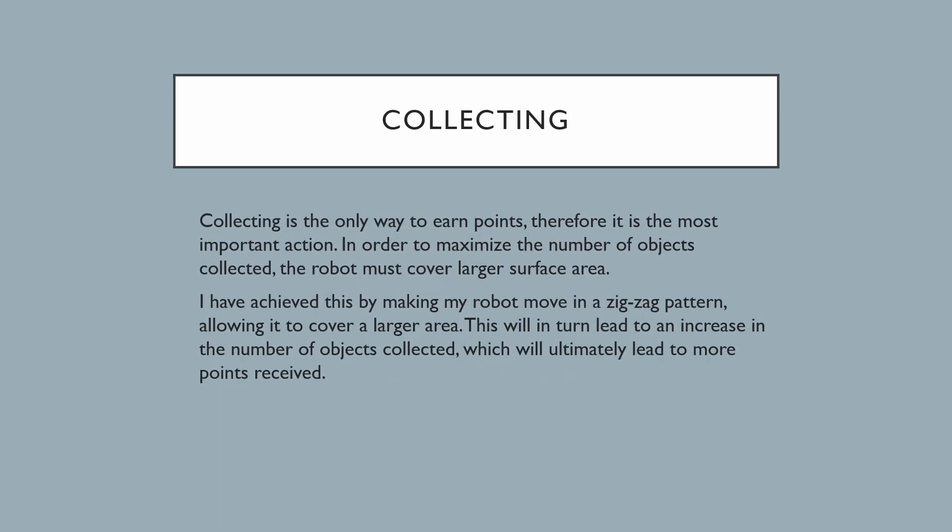Since collecting is the only way to earn points, it is the most important action. In order to maximize the number of objects collected, the robot must cover a larger surface area. I have achieved this by making my robot move in a zigzag pattern, allowing it to cover a larger area. This will in turn lead to an increase in the number of objects collected, which will ultimately lead to more points.